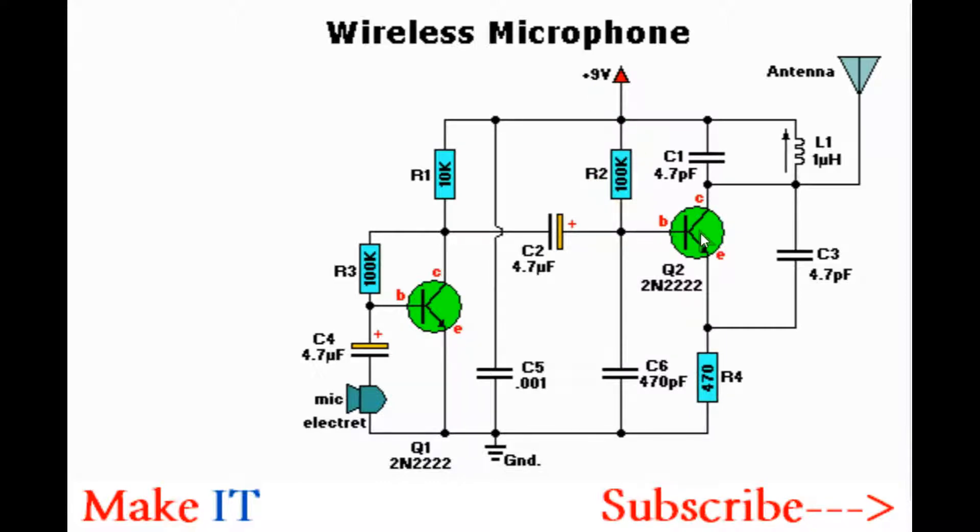R2 biases the final transistor Q2. The emitter is connected to ground via this 470 ohms resistor, which minimizes the current usage of the circuit.